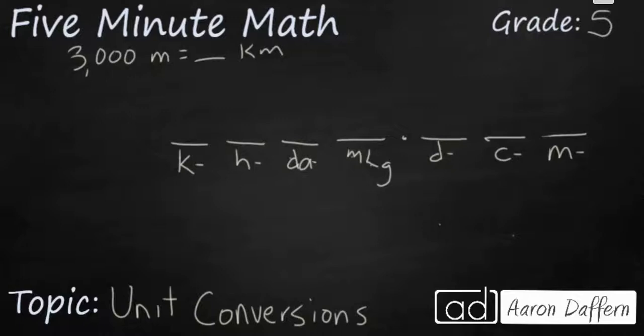Another way to think of the metric system is using a place value chart here. So we have in the ones place right here our base unit whether it be meters, liters, or grams. And then you have a series of prefixes. So deca is right here in the tens place. Centi is in the hundredths place. And milli is in the thousandths place. And it goes all the way up to the thousands place. And that's kilo. And that's what we're doing right here. We have kilometers.